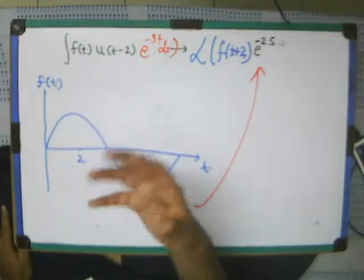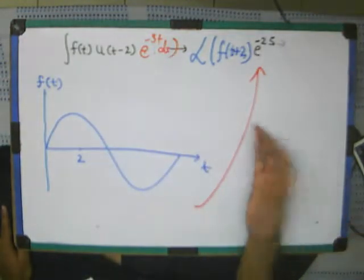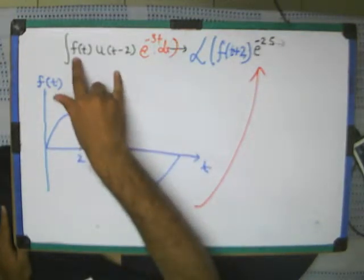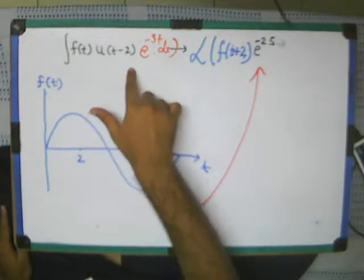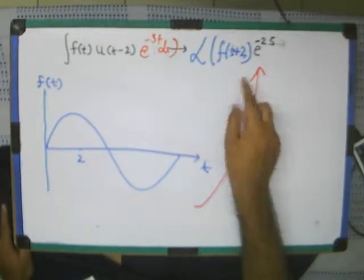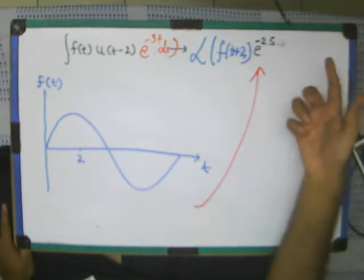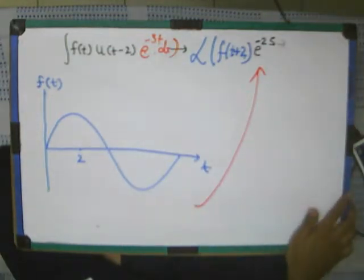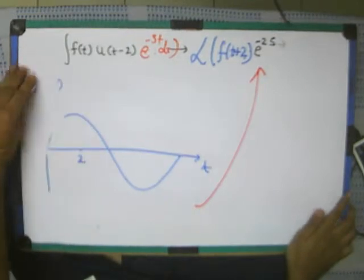For example, like another example of how we can simplify. We were told in the university, in the school that just remember this formula. F of t, u of t minus a, the Laplace transform will be the Laplace transform of F of t plus a times e to the power minus ks or something like that.